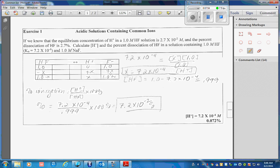If we know the equilibrium concentration of a hydrogen ion is 2.7 times 10 to the negative second molar, and the percent dissociation is 2.7, please find the proton concentration and the percent dissociation of HF in a solution that also has the common ion, sodium fluoride. We start out with hydrofluoric acid concentration of 1, it has no protons.